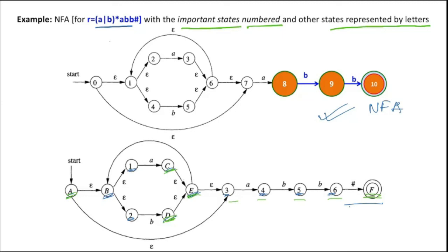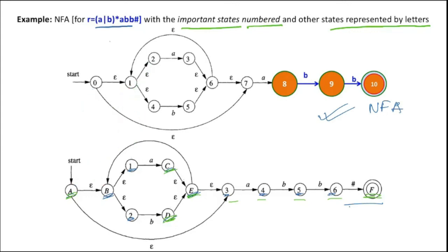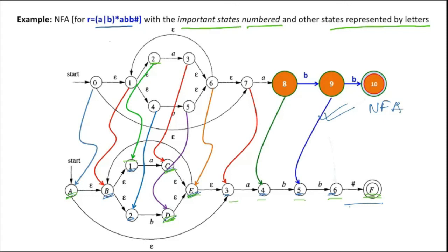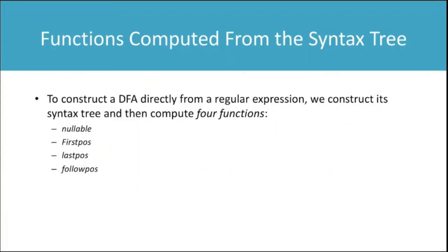You can see that state 0 corresponds to A, state 1 corresponds to B, state 2 corresponds to position 1, state 4 is position 2, state 3 is C, and so on. The additional transition added is due to the hash augmentation. Next we look at functions computed from the syntax tree.